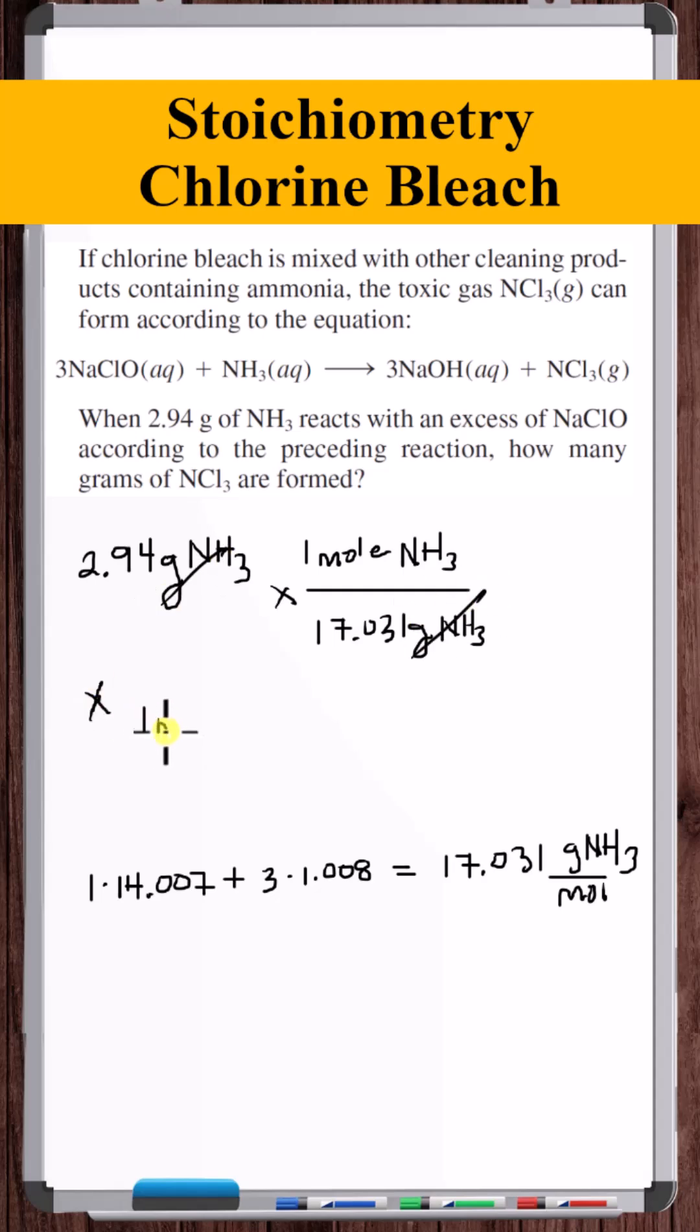According to this chemical equation, for every one mole of ammonia, one mole of NCl3 is produced. We just need the molar mass of NCl3 to get the grams of NCl3 produced.